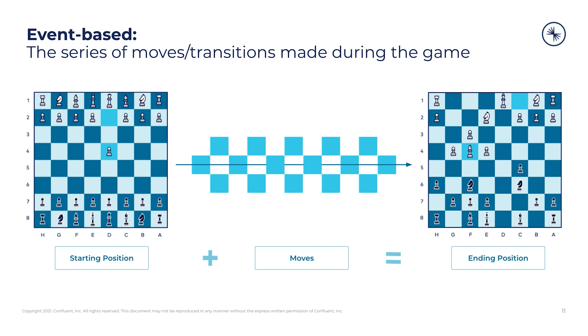Event modeling is different. Rather than taking a snapshot of the whole board, we notice that the game of chess has a known starting state — the starting position. From there, a number of moves are made, so if we replay all the moves from the starting position, we can recreate any point in the game. Each chess move is an event, a transition from one state to the next. The event doesn't need to contain information about the positions of other pieces on the board, although there's nothing to stop it from doing so, but unlike the state-based approach, the whole stream of events is required to derive the current position.